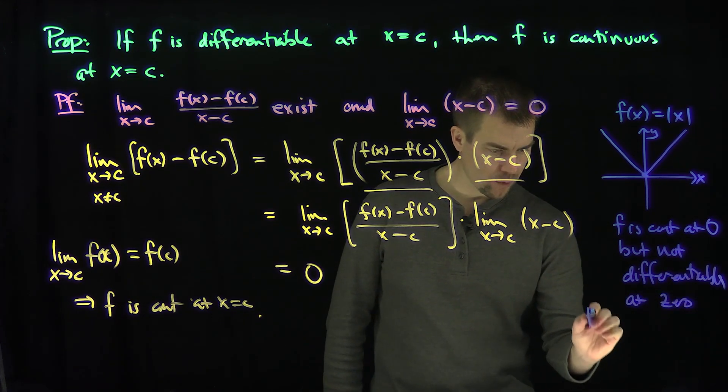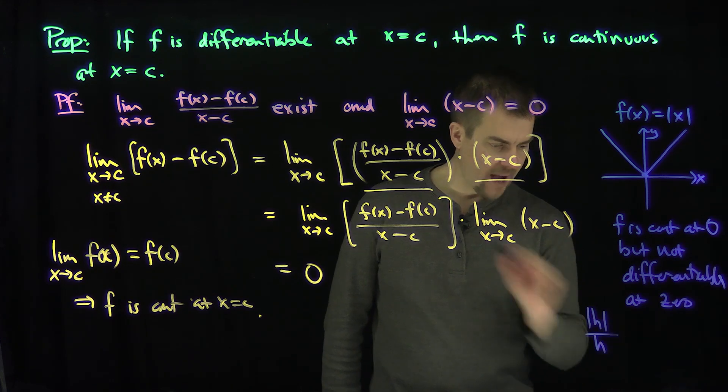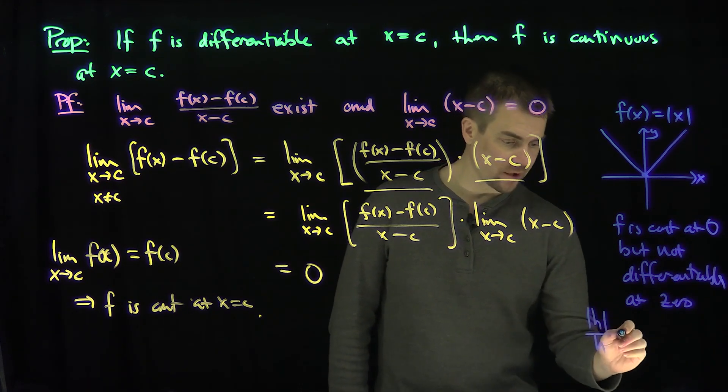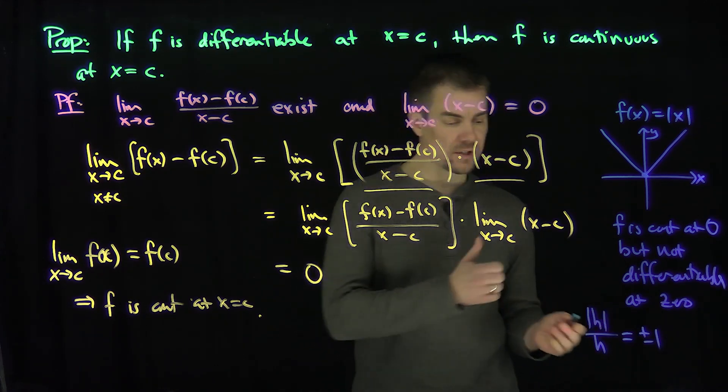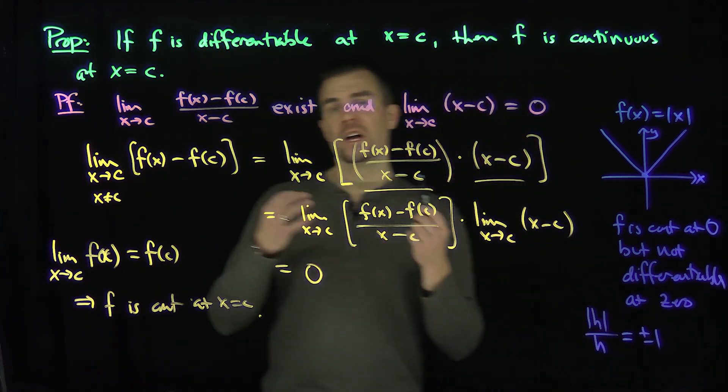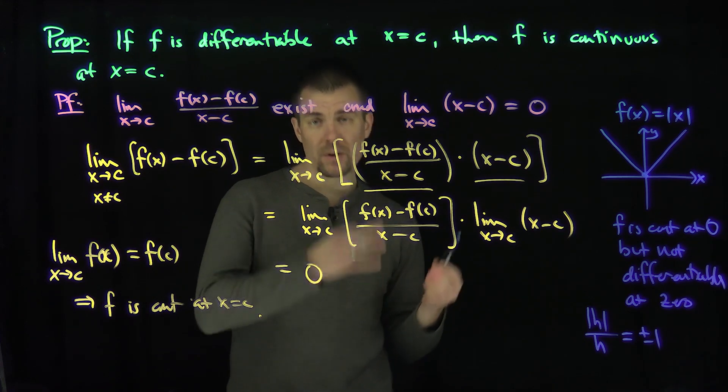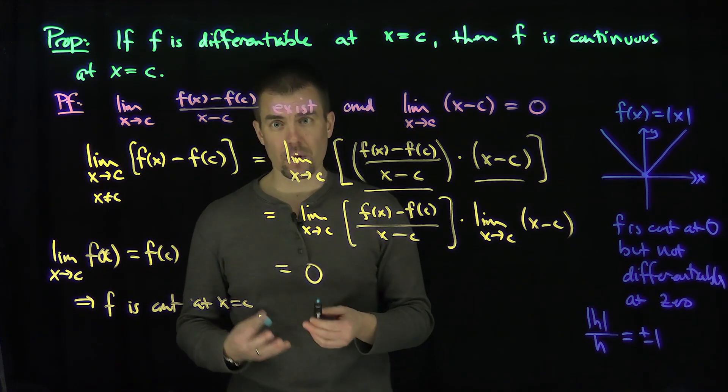In fact, the difference quotient looks like absolute value of h over h, which is plus or minus one based on where h is, if h is less than zero or if h is greater than zero. So if you're differentiable, then you're continuous, but if you're continuous, you're not necessarily differentiable.